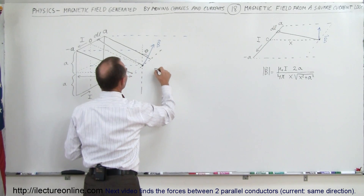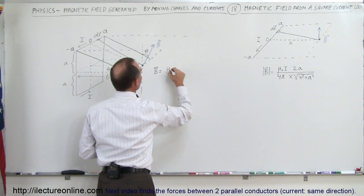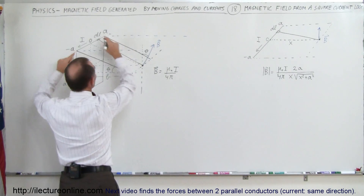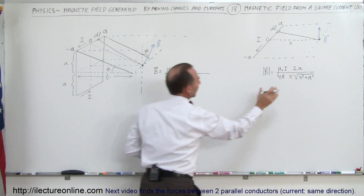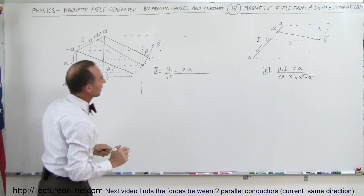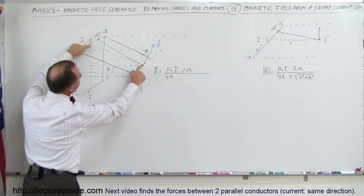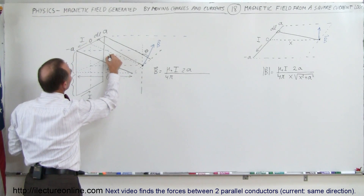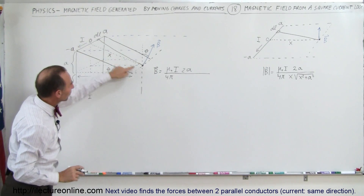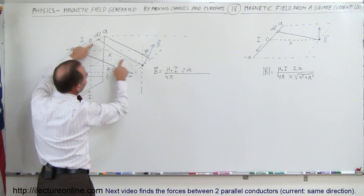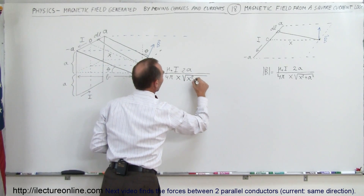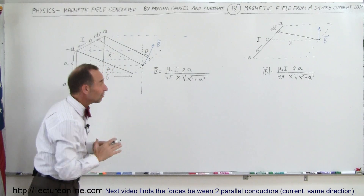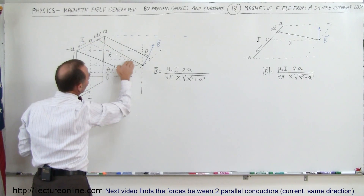So the B field here is still μ₀ divided by 4π times the current — that doesn't change. The length of the segment is still 2A, so that's the same. Divided by x and the square root of x² plus A². The key difference is that instead of x being the horizontal distance, x is now the slanted distance from the side segment to the point of interest.